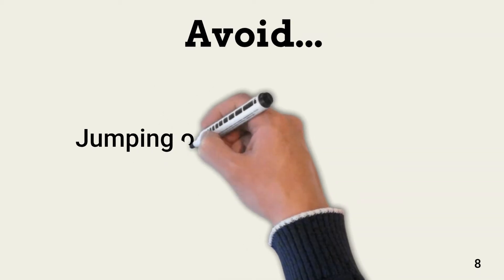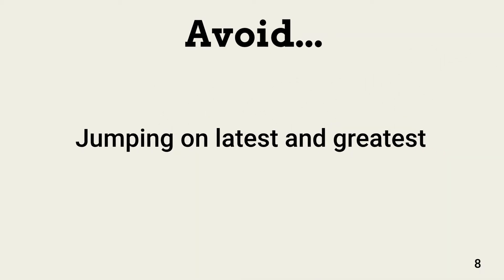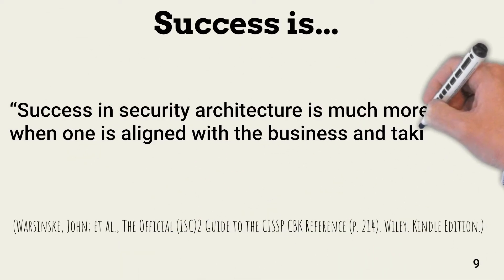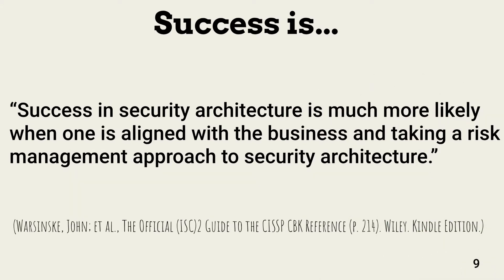Sometimes architecture design goes off the rails. The architect and other stakeholders might want to include a control or design just because it's the latest and greatest technology. Architecture design must stay on track and not let excitement over new tech override what is reasonable and appropriate based on the business's operational environment. According to the official ISC Squared Guide to the CISSP Common Body of Knowledge, success in security architecture is much more likely when one is aligned with the business and taking a risk management approach to security architecture.